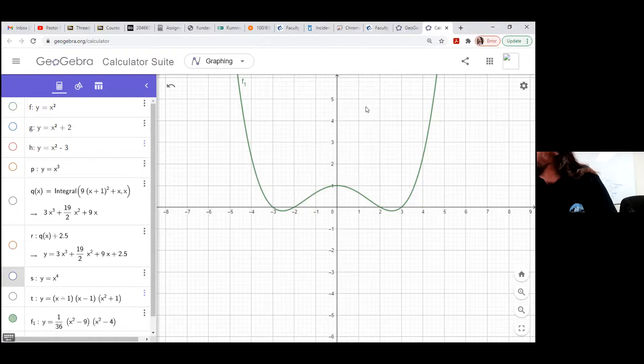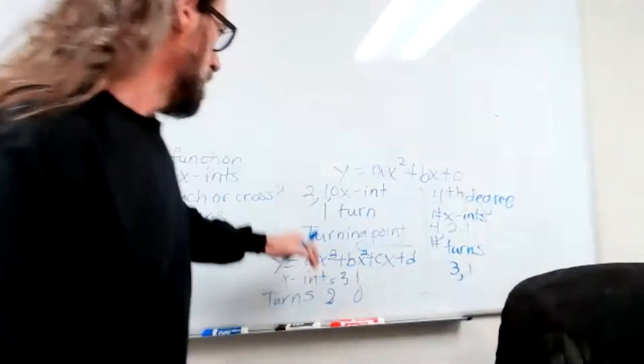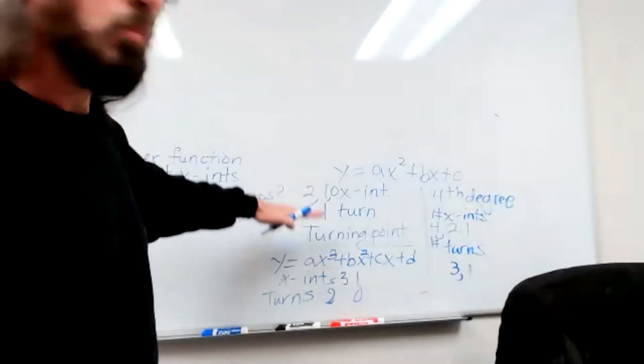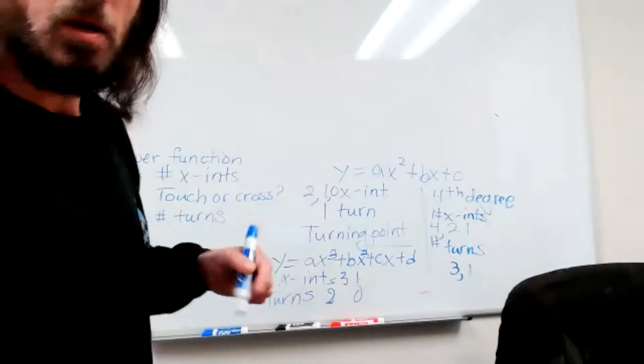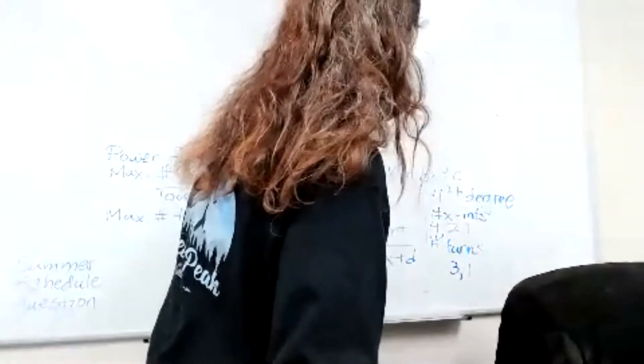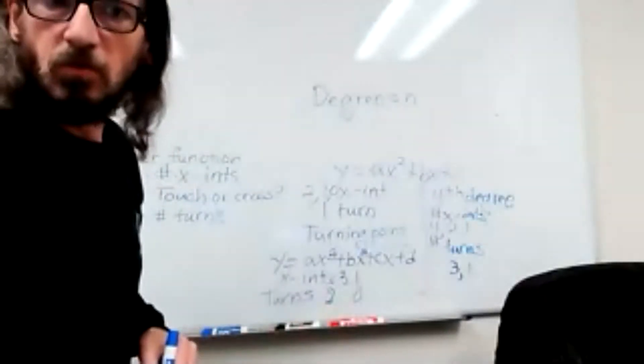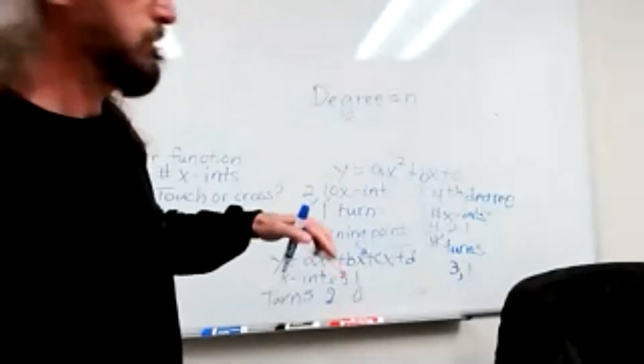So the point I want to make is that the number of x-intercepts that you can have, if the degree is n, then the number of x-intercepts you're going to have is at most n. You could have less than that.